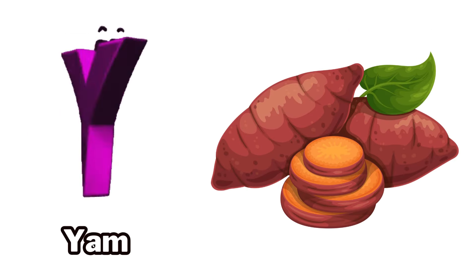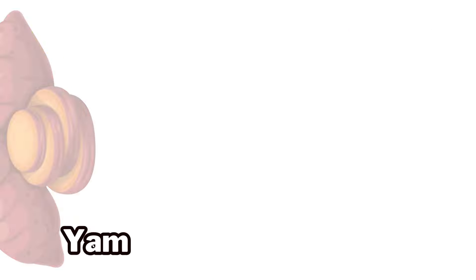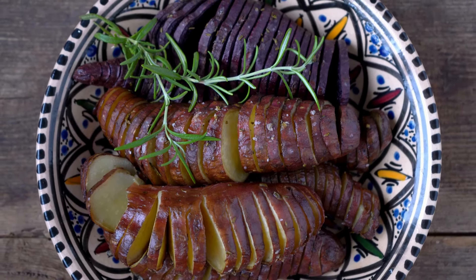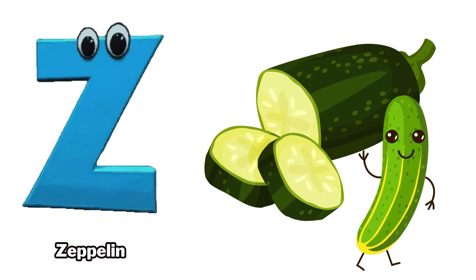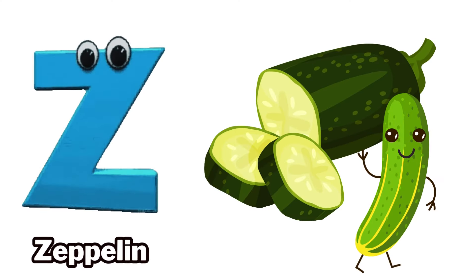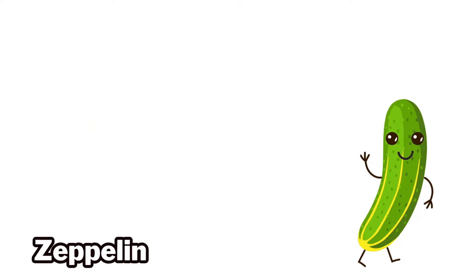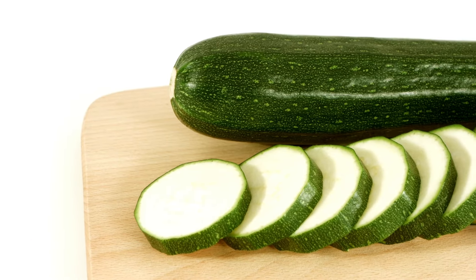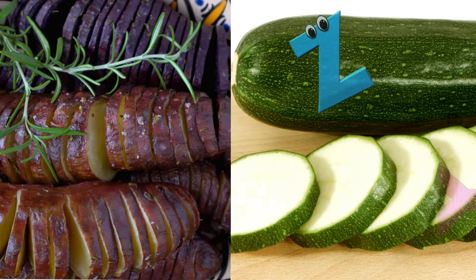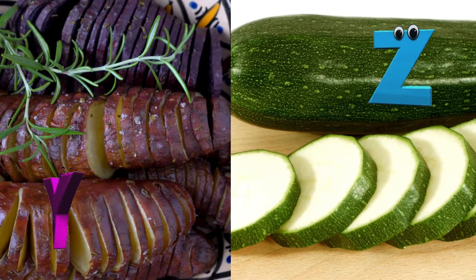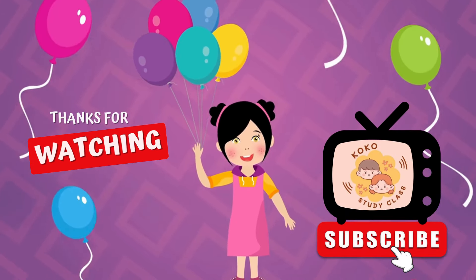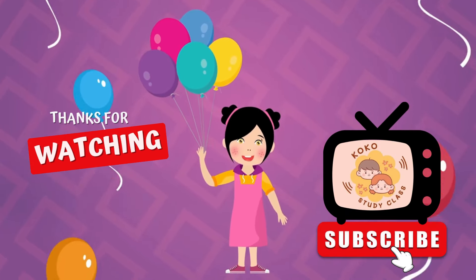Y is for yam. Y. Yam. Z is for zucchini. Z. Zucchini. I'll see you next time.